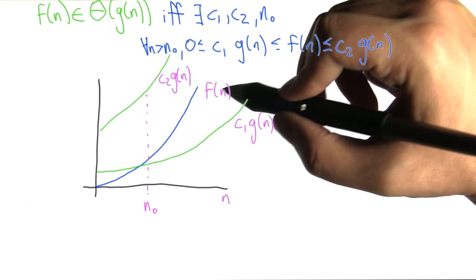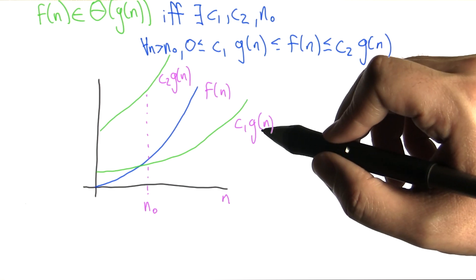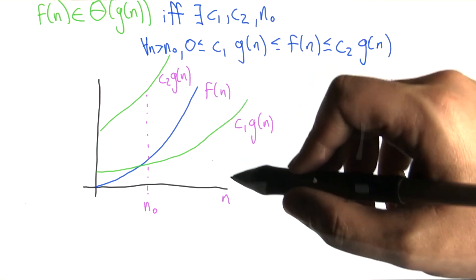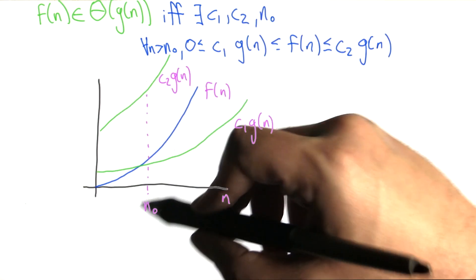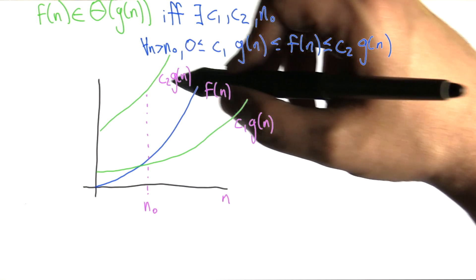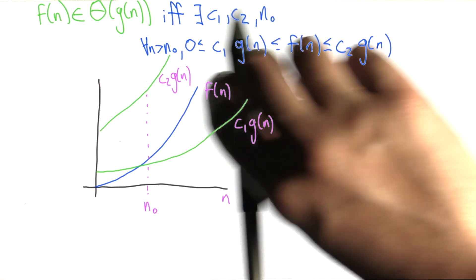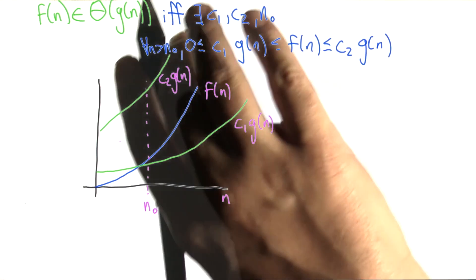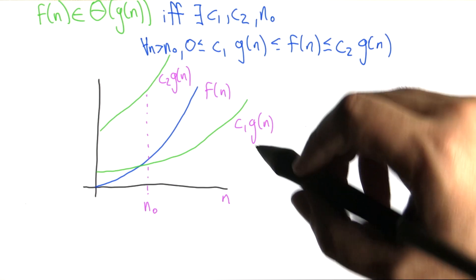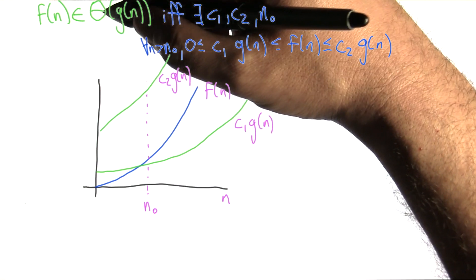To illustrate this idea with a picture: imagine we have some function f of n that grows as n gets bigger. We also have some function g of n that we can multiply by c1, or by some bigger number c2. What we find is that once we get out to the right of some threshold n0, f of n is always between c2 times g of n and c1 times g of n. In the beginning maybe weird things happen, but once we get out far enough — asymptotically, in the limit, as things get really big — f of n lies between c1 times g of n and c2 times g of n. If such c1, c2, and n0 exist, then we can say that f of n is in big theta of g of n.